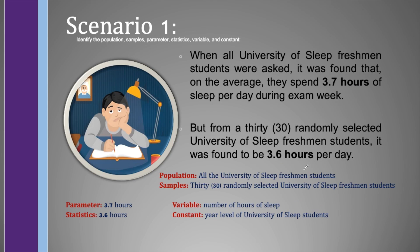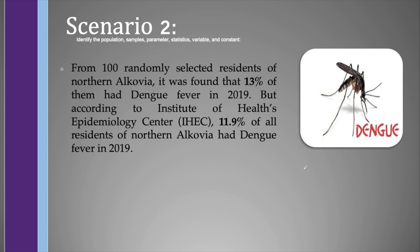For scenario number 2, from 100 randomly selected residents of Northern Alcovia, it was found that 13% of them had dengue fever in 2019. But according to the Institute of Health's Epidemiology Center, 11.9% of all the residents of Northern Alcovia had dengue fever in 2019. Can you identify which is the population, samples, parameters, statistics, variable, and constant?